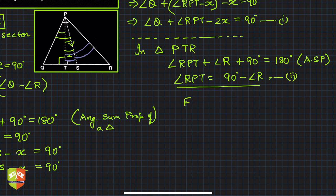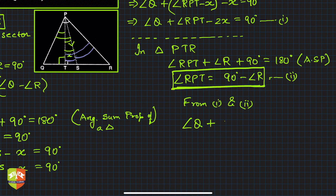Now from 1 and 2, I can substitute ∠RPT by 2, whatever we have got. So we can write ∠Q + ∠RPT—I'm removing and replacing it by this—90 degrees minus ∠R.